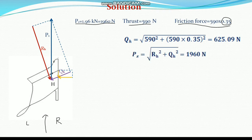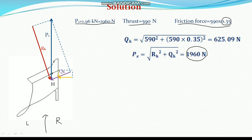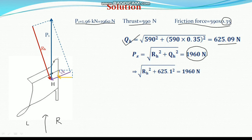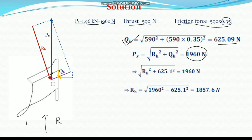We can calculate QH and RH. The resultant of these parasitic forces and useful forces gives Px — the horizontal component, or draft. This is the case when there is no side draft. The draft is the resultant of QH and RH. The draft is given as 1960 N. Since QH is already calculated as 625.1 N, putting this in: RH squared plus 625.1 squared equals 1960 squared. We can find out RH — the resultant of all useful forces — as 1857.6 N.